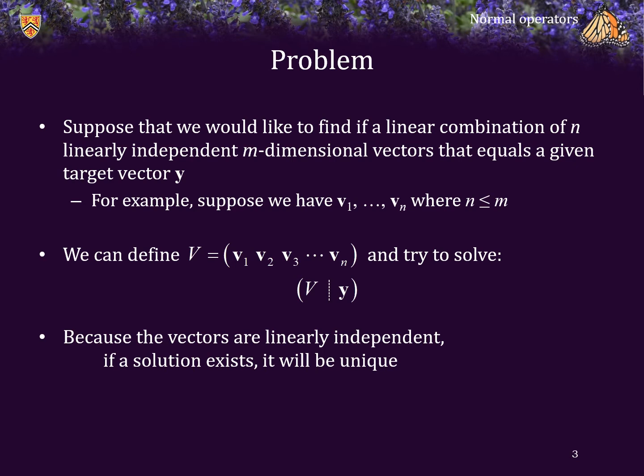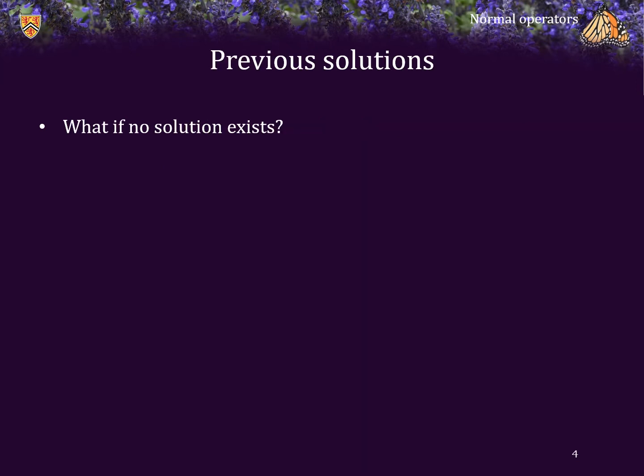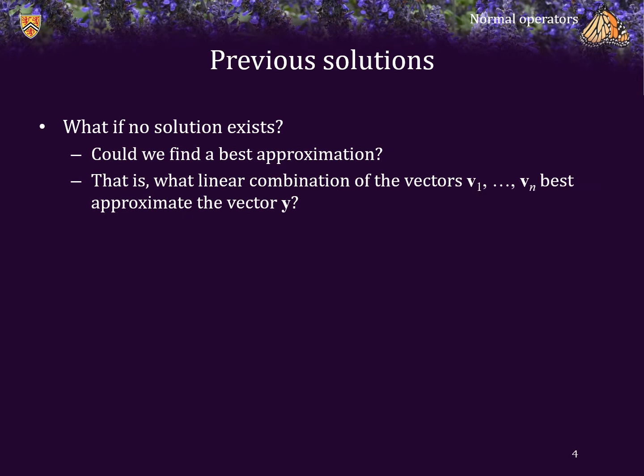After all, if the vectors are linearly independent, the rank of the matrix V will be equal to n. So if a solution exists, it's unique. But what happens if no solution exists? Could we find a best approximation? That is, what linear combination of the vectors V1 through Vn best approximates the vector y?